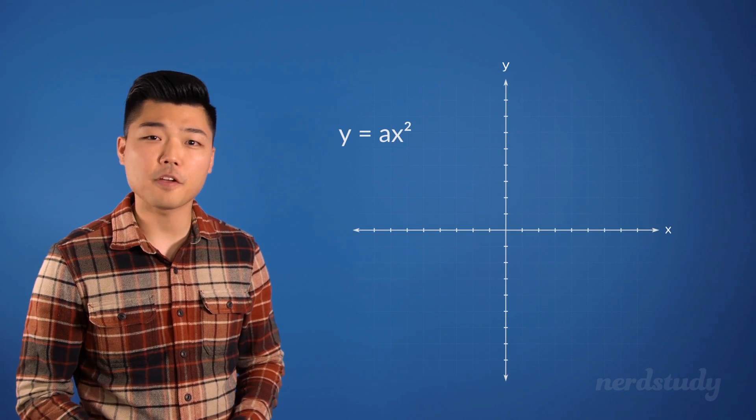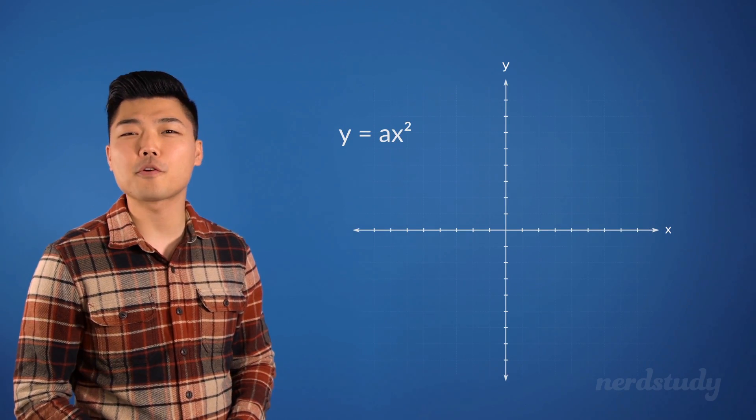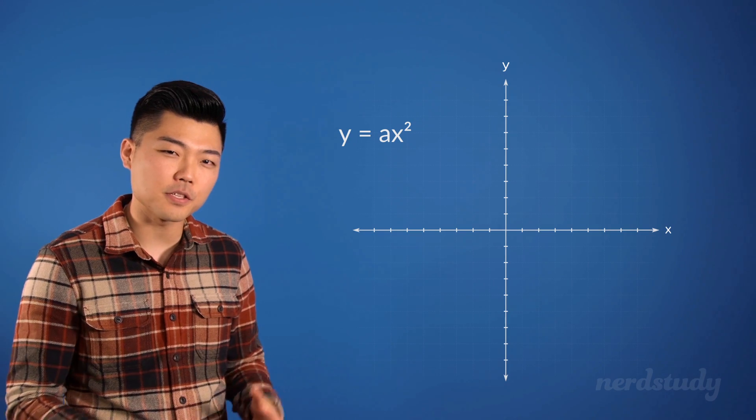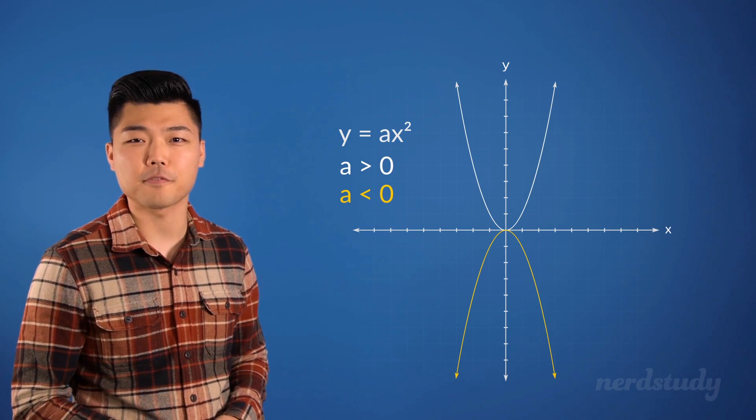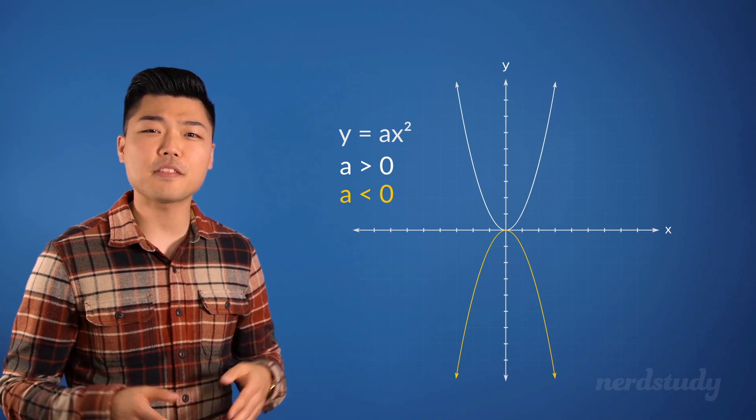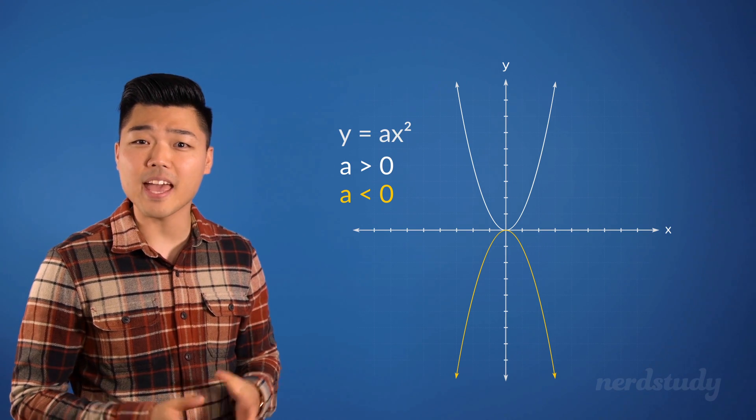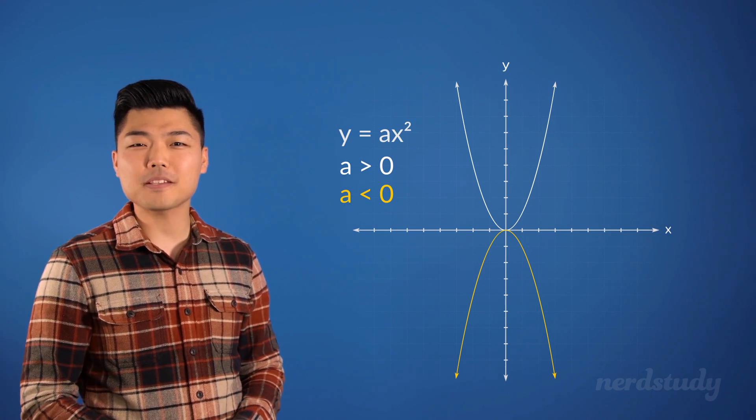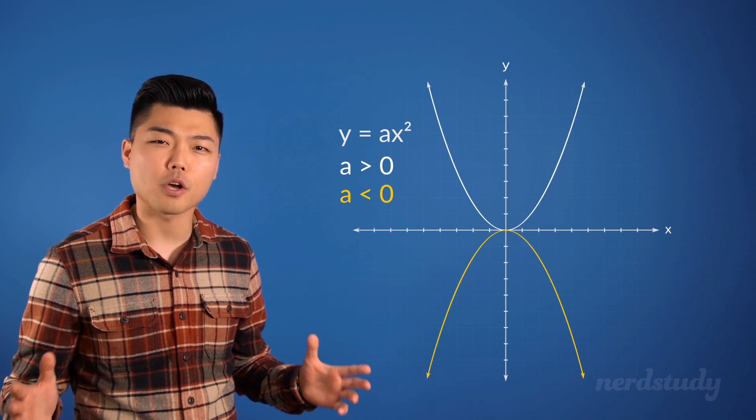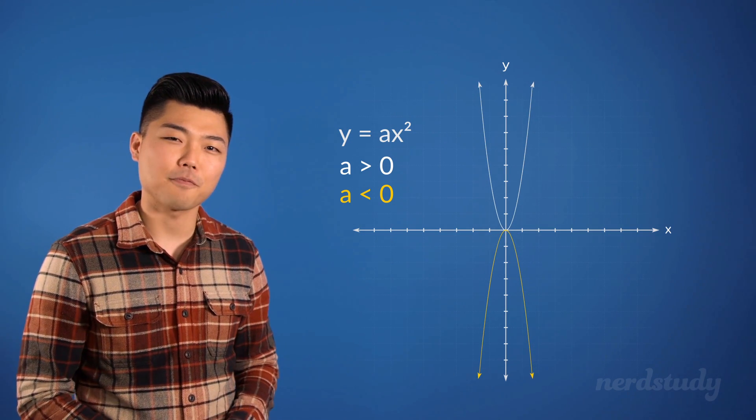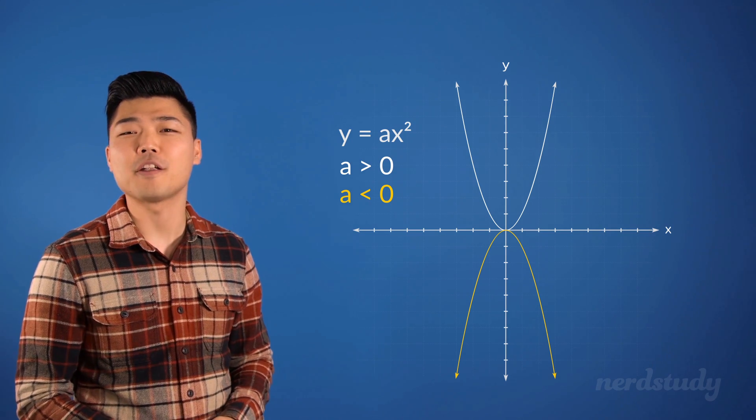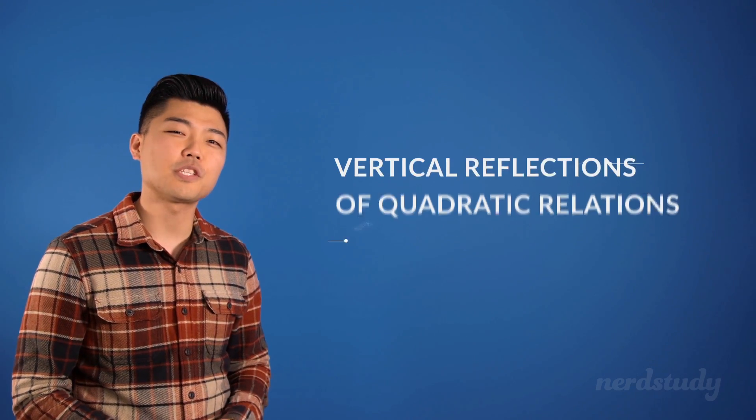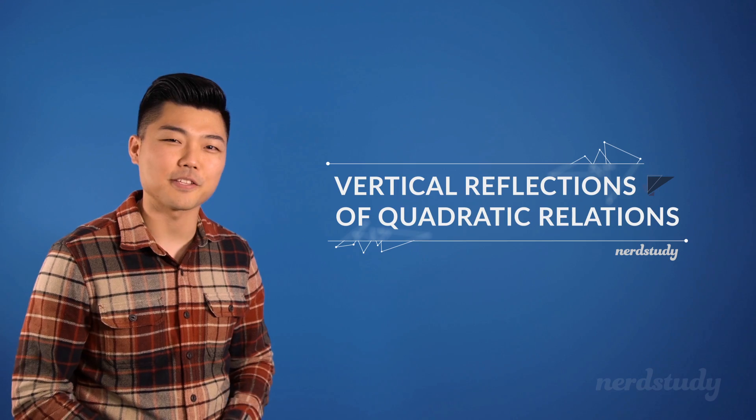So, you'll notice how we talked about how the vertical reflection of a graph is determined by whether or not the a value is positive or negative. But, it turns out to be the case that depending on how big a is in its absolute value, you can expect to see a stretch or compression in the graph. This is a topic that we will save for our next video. So, we will see you guys in our next lesson.